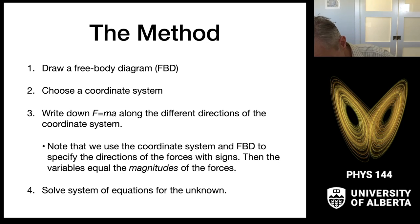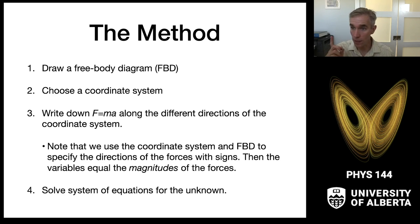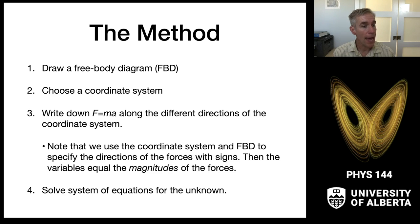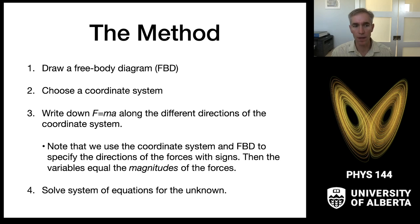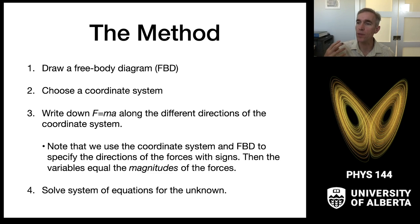The standard method for analyzing systems: first create free body diagrams, then choose coordinate systems, then write down F = ma along the different directions of the selected coordinate system, and solve the system of equations for unknowns. In this class, I'll use coordinate systems and free body diagrams to specify directions of forces with signs, and the variables I work with will typically be magnitudes of forces. We solve for magnitudes, use coordinate systems and drawings to handle vector directions, and reconstruct vectors at the end.